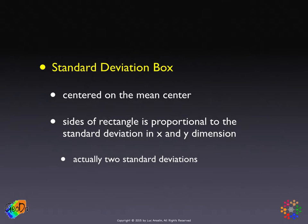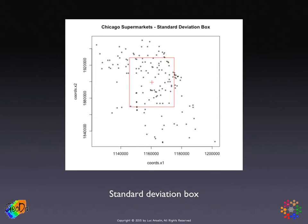We compute the standard deviation from the x and y coordinates just as from any other variable. The first visualization is the standard deviation box — a rectangle centered on the mean center with its sides parallel to the main axes, each side being two standard deviations long. In the Chicago example, the red box is centered on the mean center, and it highlights that there is more dispersion in the vertical direction than the horizontal, primarily due to the shape of Chicago along Lake Michigan.